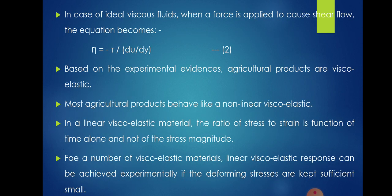In case of ideal viscous fluid, when a force is applied to cause shear flow, the equation becomes eta is equal to minus tau by du by dy, where du by dy is the strain rate. Based on the experimental evidences, agricultural products are viscoelastic in nature.